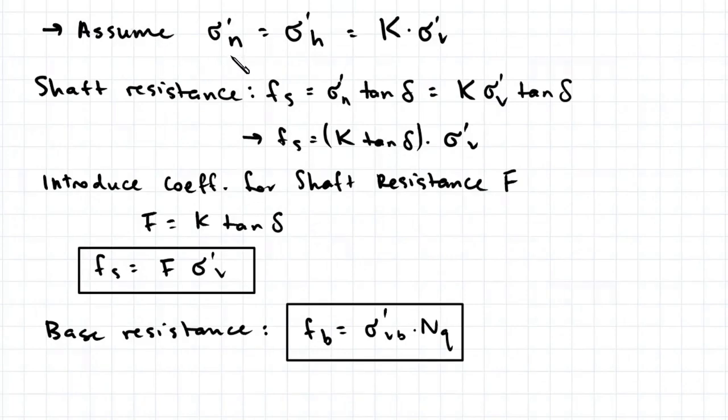We can assume the normal stress is equal to horizontal stress, which is equal to a factor multiplied by the overburden pressure. The shaft resistance Fs is equal to the normal stress multiplied by tan delta, which we can rewrite as k sigma-v tan delta, and also we can rearrange this to k tan delta multiplied by sigma-v. We can also introduce a new coefficient for the shaft resistance known as F, where F is equal to k tan delta. The shaft resistance Fs is then written as F multiplied by sigma-v.